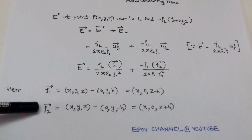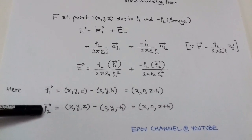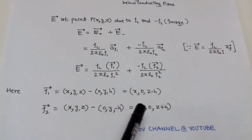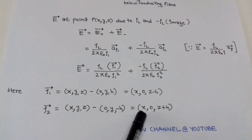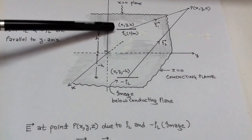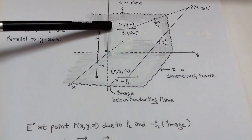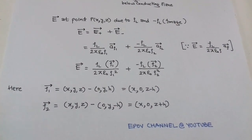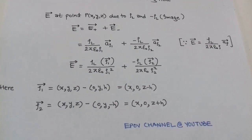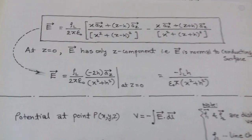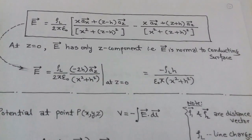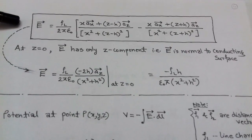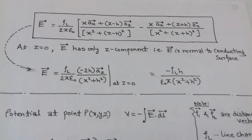The distance vectors rho_1 and rho_2 have coordinates (x, 0, z-h) and (x, 0, z+h) respectively, as obtained from the figure. After putting these values, we get the electric field E due to line charge density rho_l with the help of the method of images.